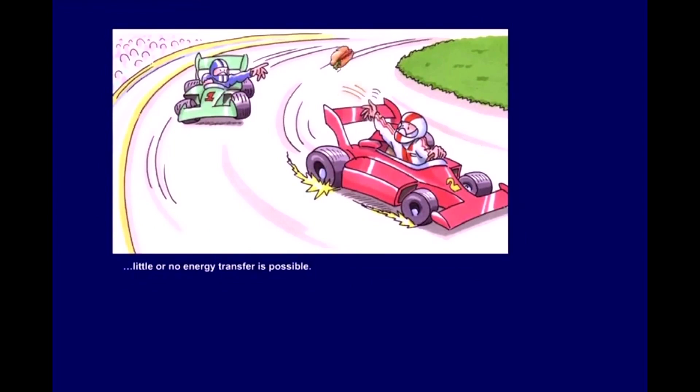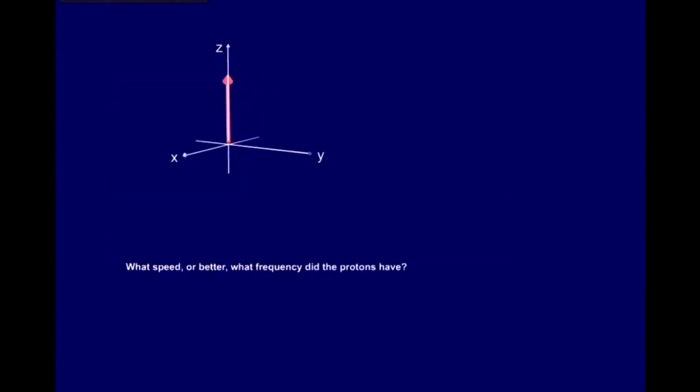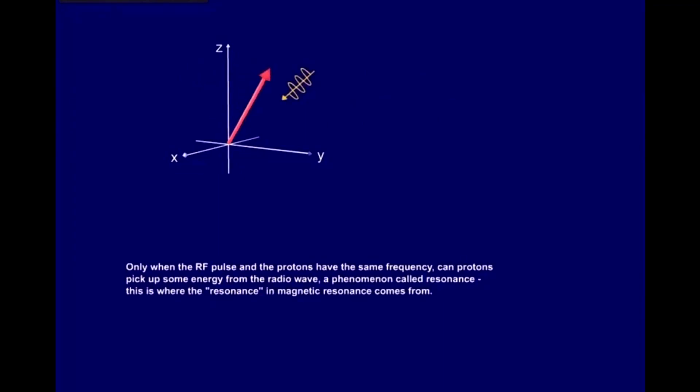What speed, or better, what frequency did the protons have? They had their precession frequency, which can be calculated by the Larmor equation. So the Larmor equation gives us the necessary frequency of the RF pulse to send in. Only when the RF pulse and the protons have the same frequency can protons pick up some energy from the radio wave.